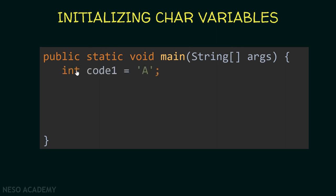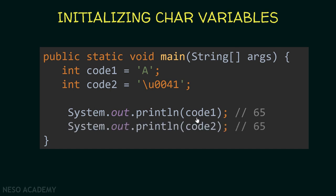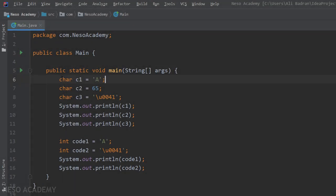Now let me show you one final example. Inside our main method, I'm going to create an integer variable equal to the character A inside single quotes. Java will see that we are storing a character inside an integer variable, so it will convert the character to its correct integer representation using the Unicode encoding scheme. We also have a second integer variable assigned the Unicode character '\u0041'. Java converts this to its correct integer as well. If we print code1 we will see 65, and if we print code2 we will also see 65.